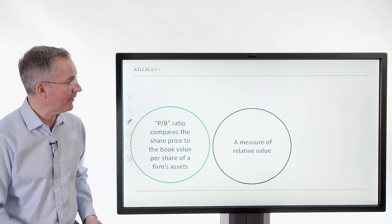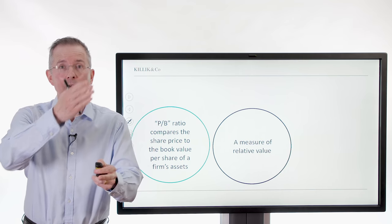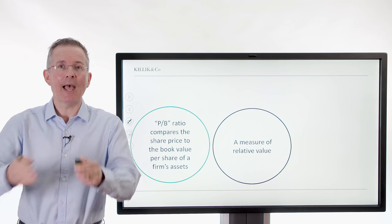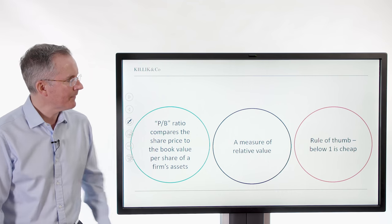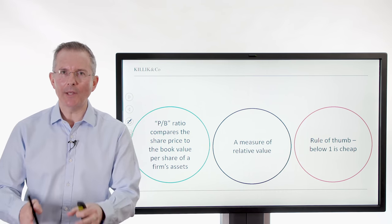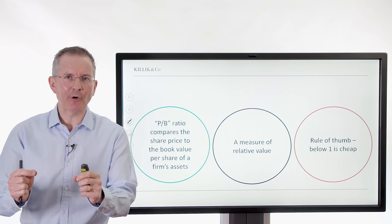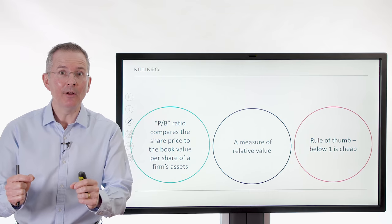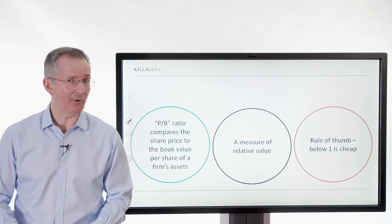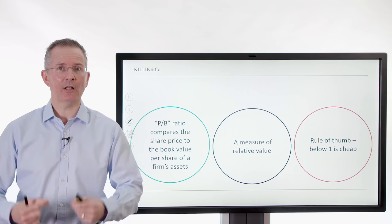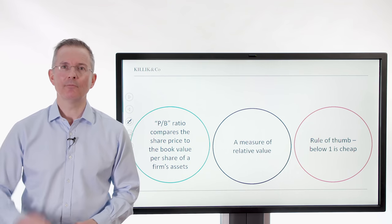Should I buy at today's price? It's a measure of relative value. You can compare the price to book to the company's going back in time, a sequence, and other peer group, the wider market, and so on. Rule of thumb: it used to be below one is cheap. I'll explain why I say used to be in a moment. But essentially if the price to book ratio comes out at say a half, that implies the price per share is only 50% of the book value per share. Then in theory you could buy all the company shares, liquidate it, and sell the assets for a massive profit. That's the theory. So below one is good.